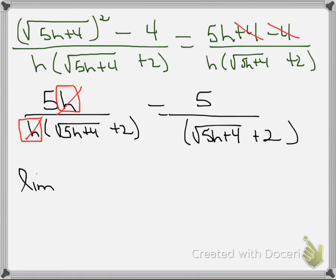So the limit as h goes to 0 of 5 over the quantity square root of 5h plus 4 and plus 2 on the outside. Well as h goes to 0, that h right there becomes a 0.